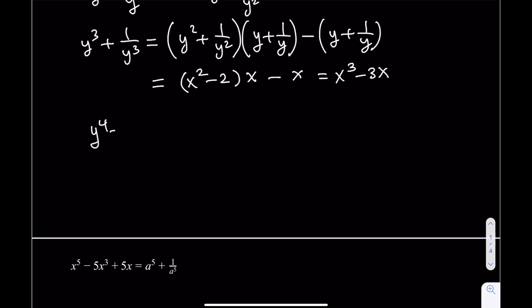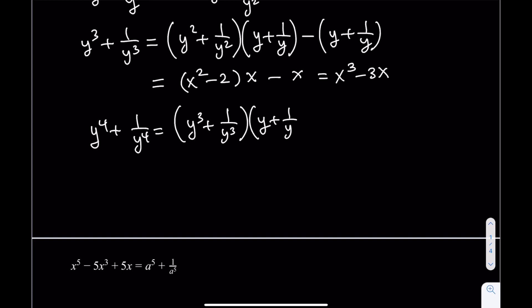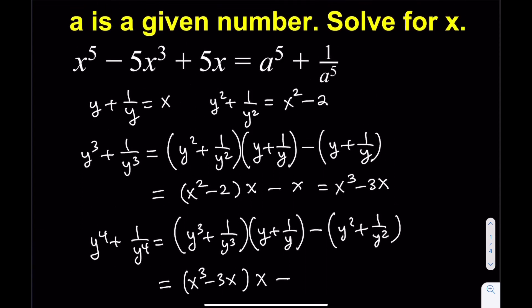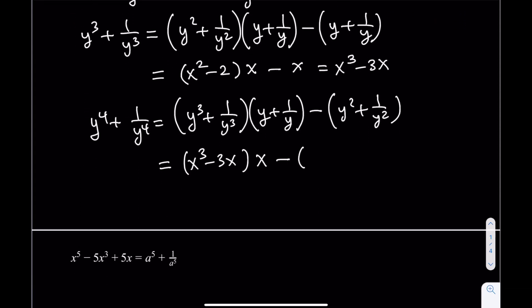Now let's calculate y to the fourth plus 1 over y to the fourth. Similarly, we take the cubes and multiply by y plus 1 over y; the unwanted terms are y squared plus 1 over y squared, so we subtract that. We get (x cubed minus 3x) times x, minus (x squared minus 2), which distributes to x to the fourth minus 4x squared plus 2.